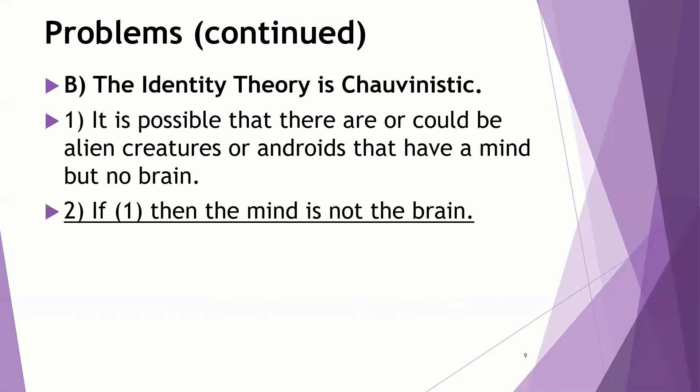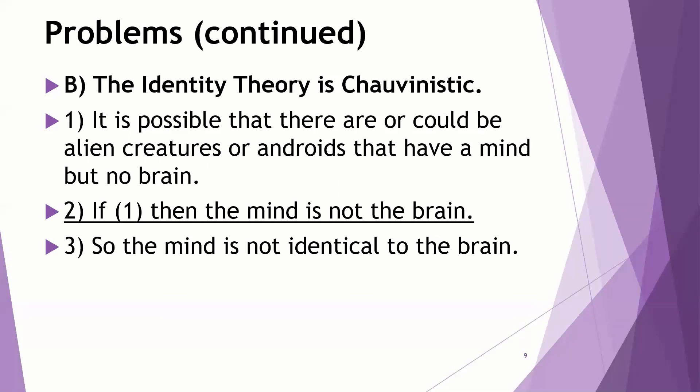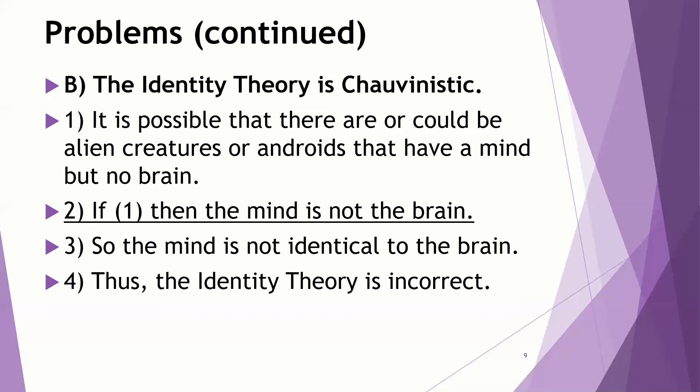And if that's true — if it is possible that there are beings with minds but no brain — then the mind is not the same thing as the brain. Putting it together: if it's possible that mind is not the brain, and it is possible, then the mind is not identical to the brain. Which of course means the identity theory is incorrect.